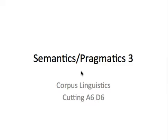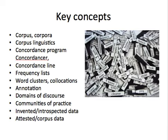I'm going to talk about corpus linguistics, around the chapter by Cutting — A6 — and the readings in section D6. To begin with, let's look at some key concepts I'll be covering. A corpus is an electronic body of data. More than one corpus is corpora, and the whole approach to looking at large quantities of electronic text is the study of corpus linguistics.